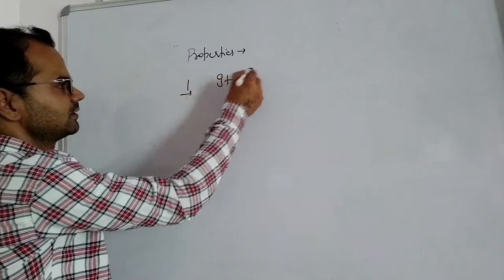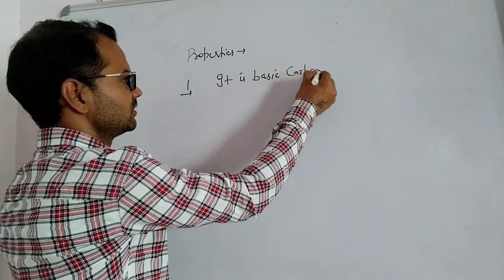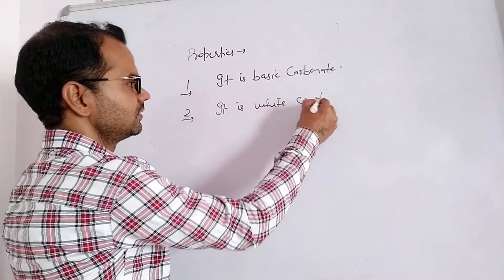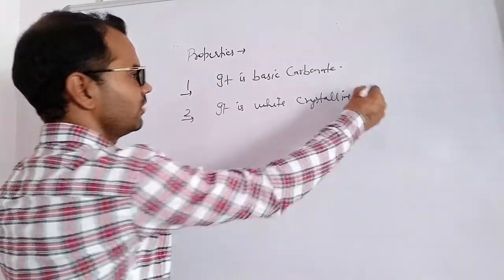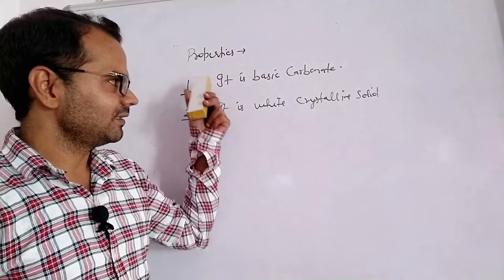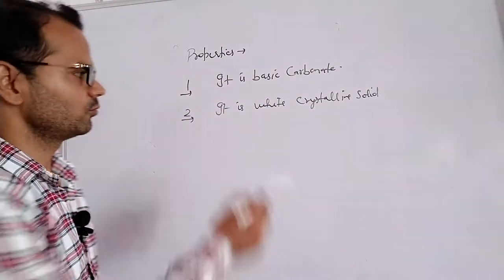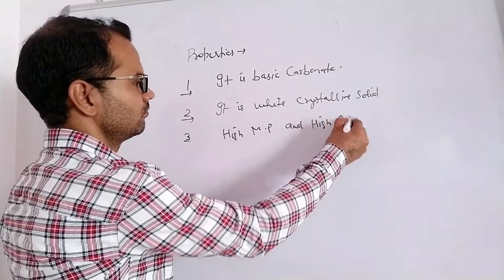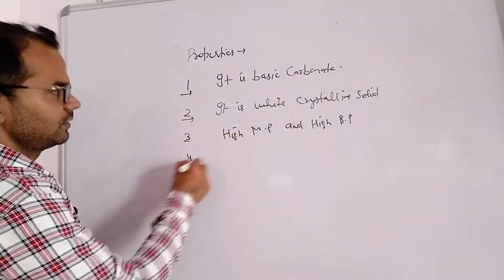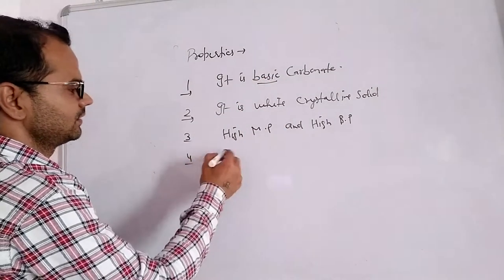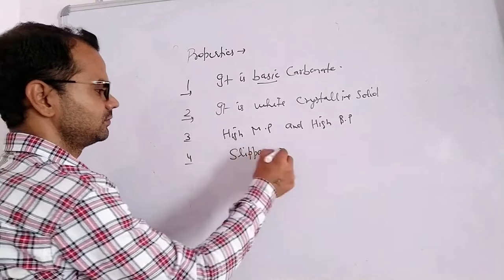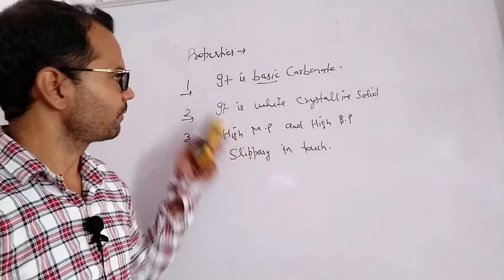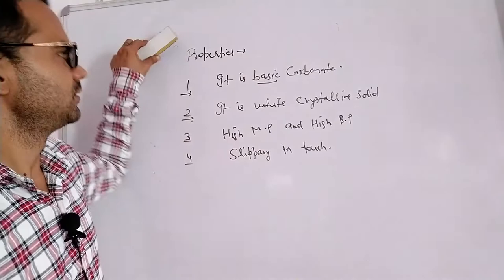Now the properties of washing soda. First, it is a basic carbonate. Second, it is a white crystalline solid. Being ionic, it has a high melting point and high boiling point. Being basic, it has a slippery touch.